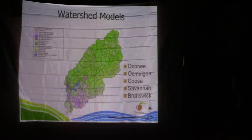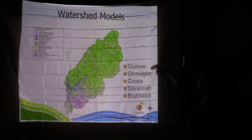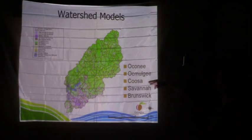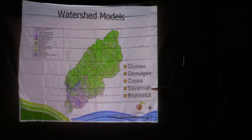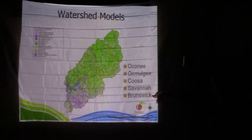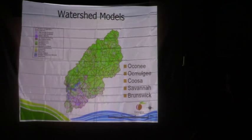We built watershed models for the Upper Oconee, the full Coosa, the lower Savannah downstream of Thurmond, and the Satilla River for Baumgardner Park. That was round one.